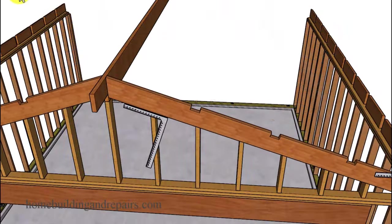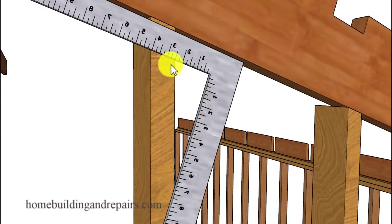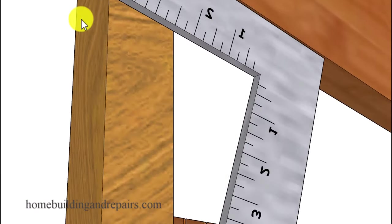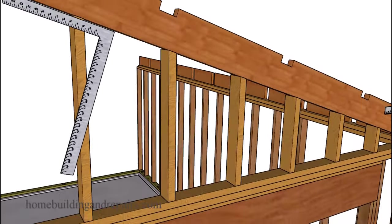And we can do the same for our gable studs. The top angle again is going to be created by lining up the 4 inch and the 12 inch measurements on the framing square.